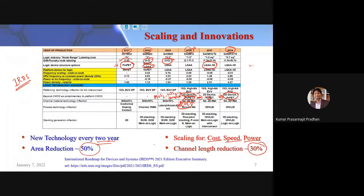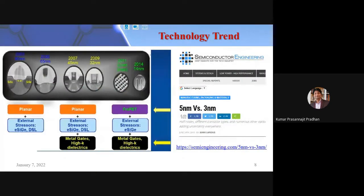Intel's roadmap started with silicon-germanium strain technology, then went to 65, 45, 32 nm, and FinFET was introduced around 2014. Gate-all-around may take over from FinFET around 2023. There is already mass production at 3 nm, and by 2024 Intel is proposing 20-angstrom technology.